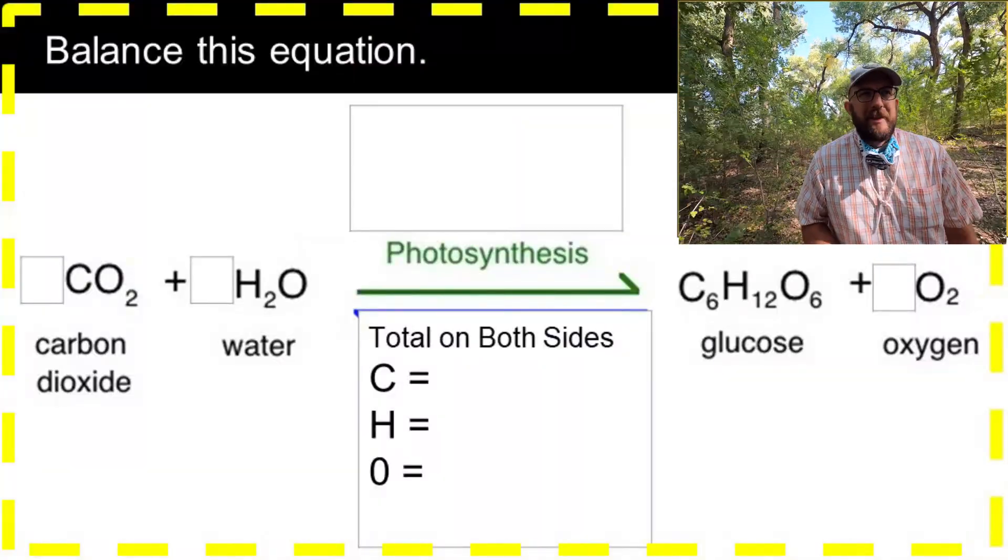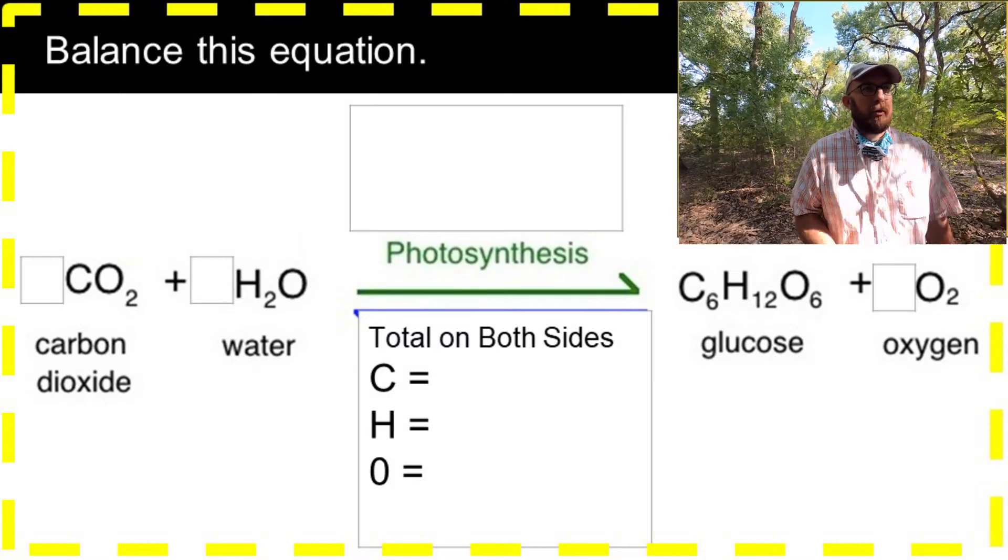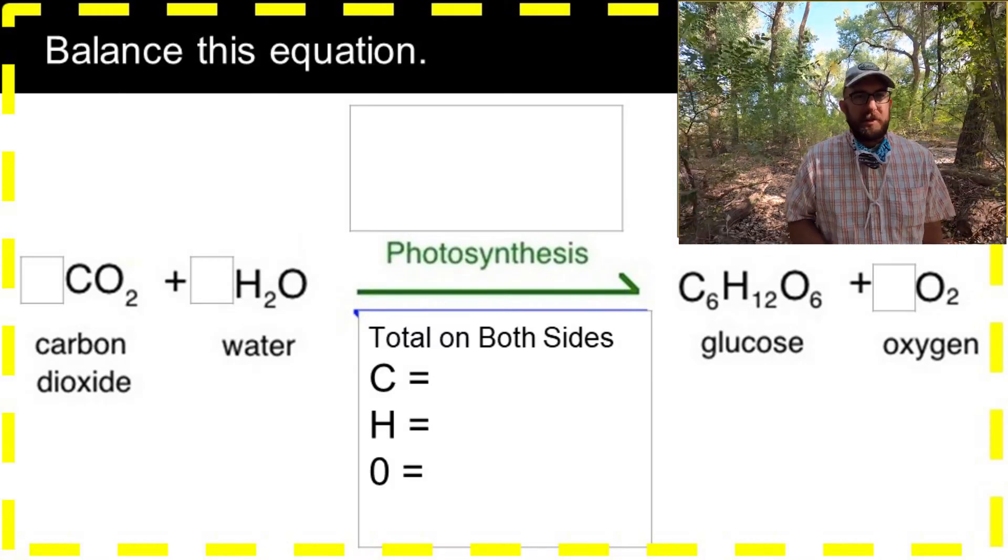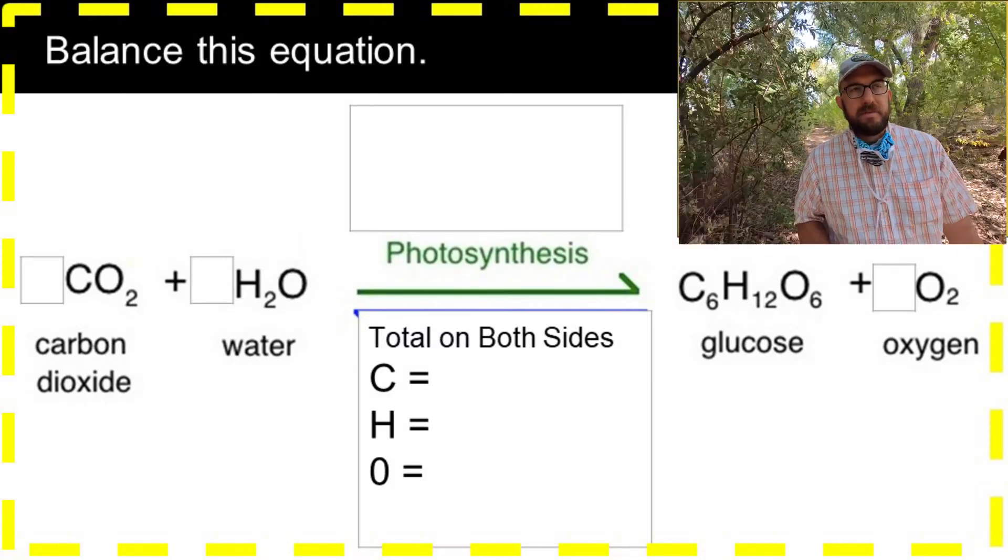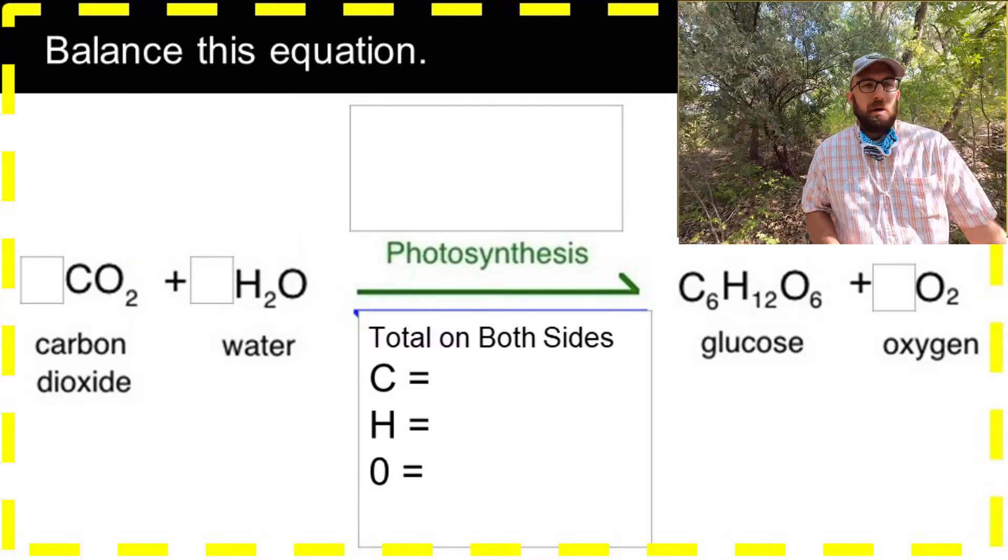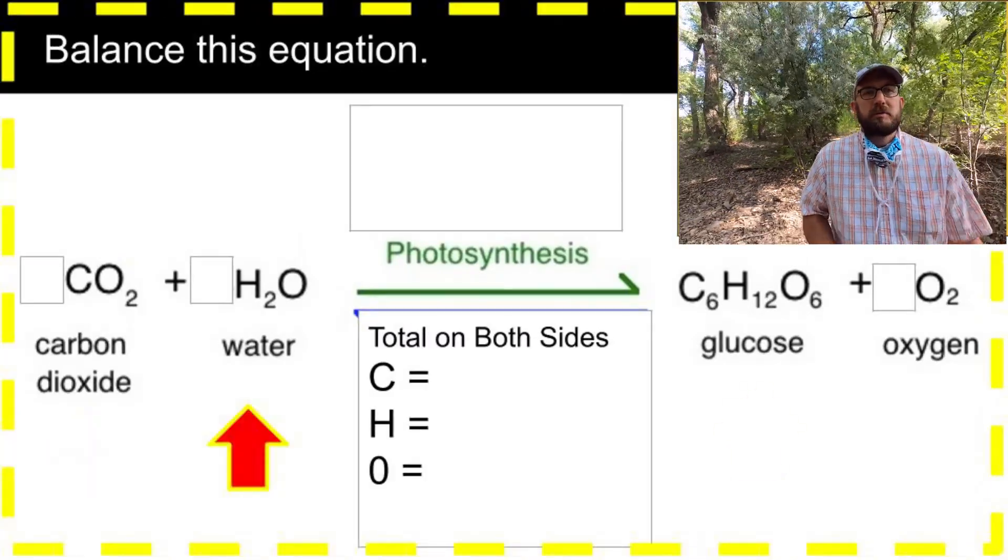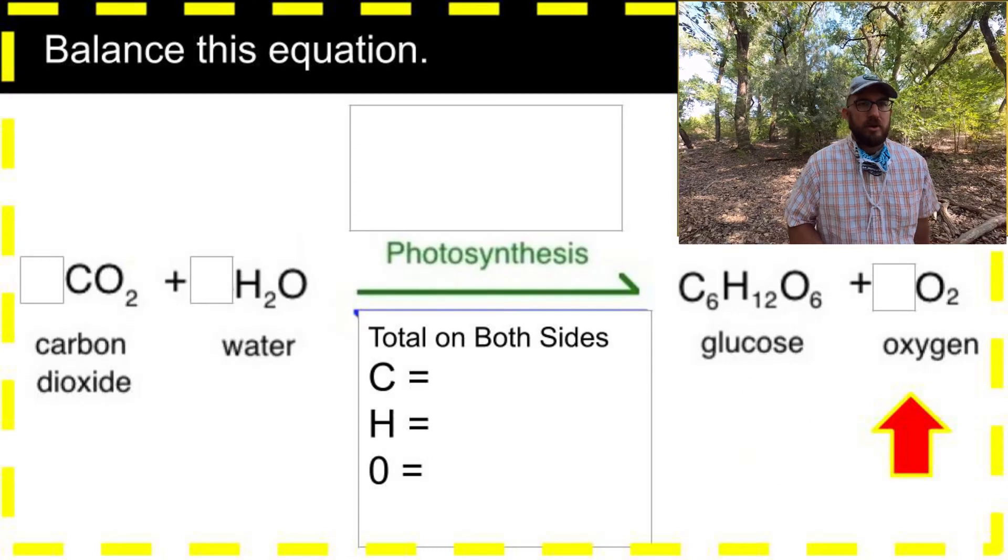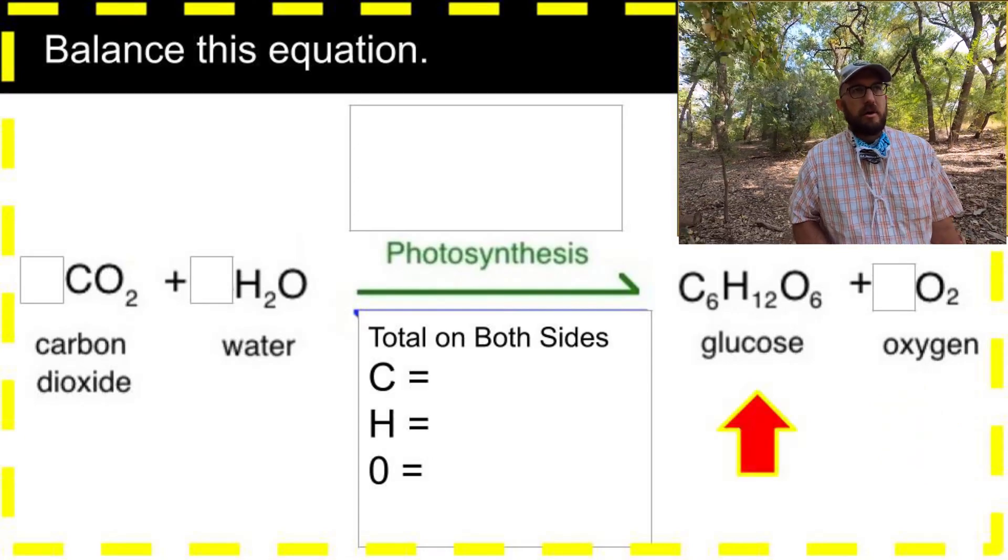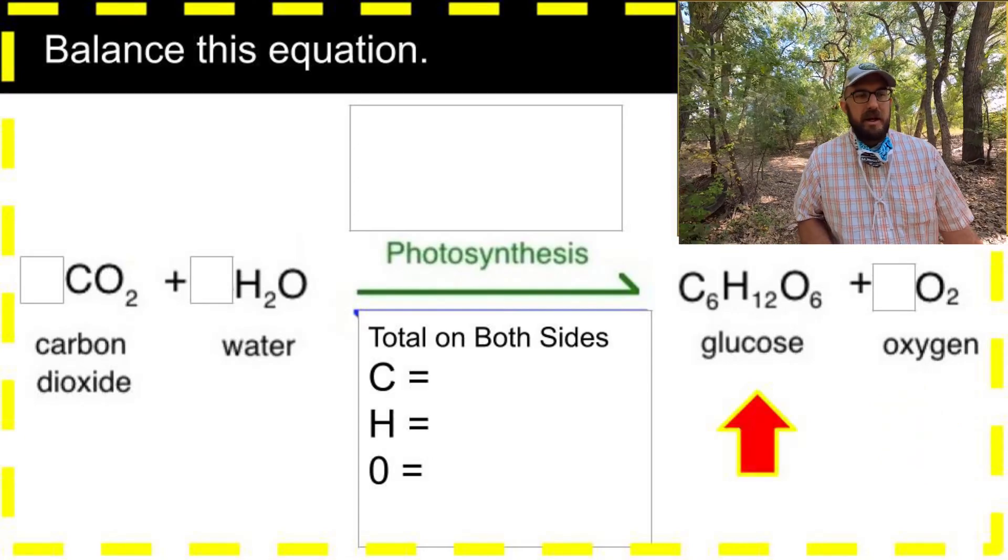So I hate to do this to you, but let's do a little bit of math. You have all the components of the photosynthesis equation. Once again, as I've said maybe four times by now, CO2, H2O, C6H12O6, and O2. Now, let's start with that C6H12O6.